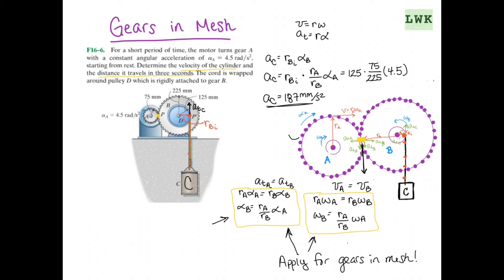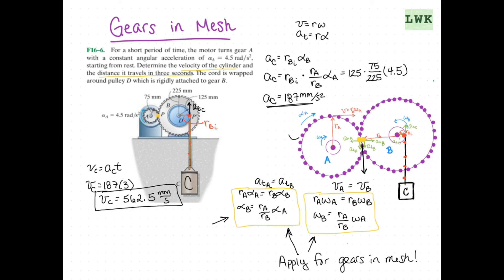Starting from rest, we can say V equals a_C times time. So V_C equals 187 times 3, giving a velocity of 562.5 millimeters per second after 3 seconds. For the distance C travels, we use s equals one-half times a_C times t squared: one-half times 187 times 9, giving a position of 844 millimeters.